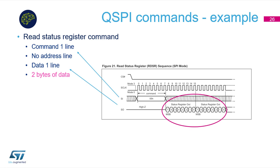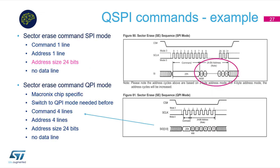Moving to the Read Status Register command: there is one byte for the command and two bytes for data without any addressing — both phases run on only one Quad SPI line. The Sector Erase command specifies the address to be erased, meaning this command has only two phases: instruction and address. The address is 24 bits in this case.